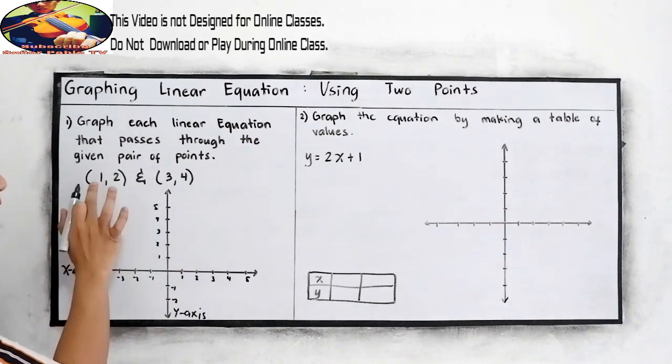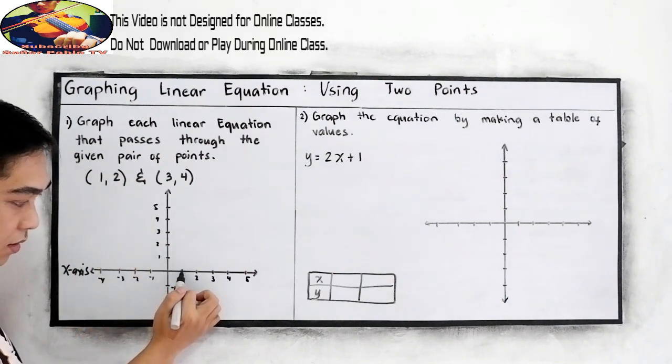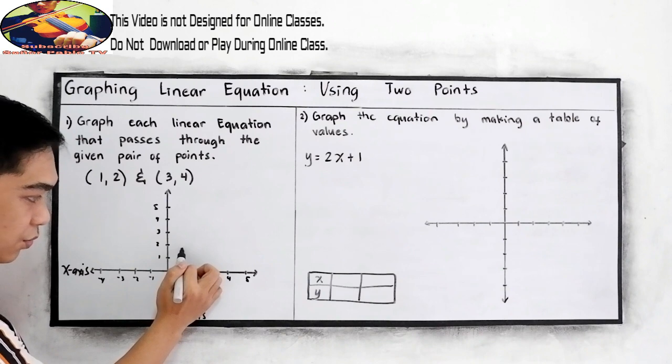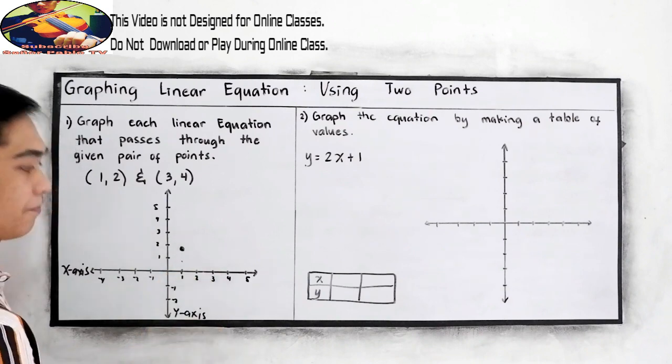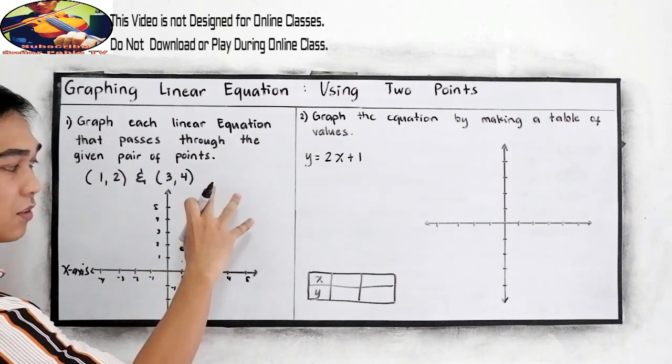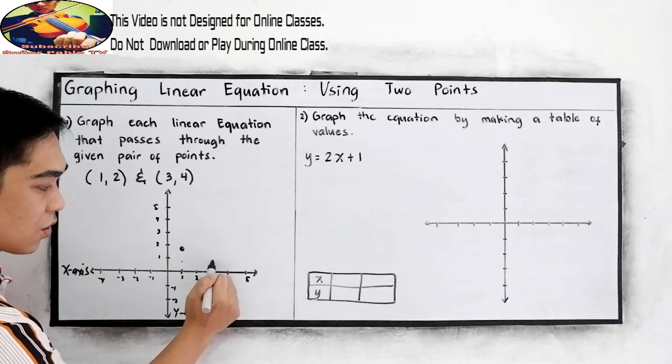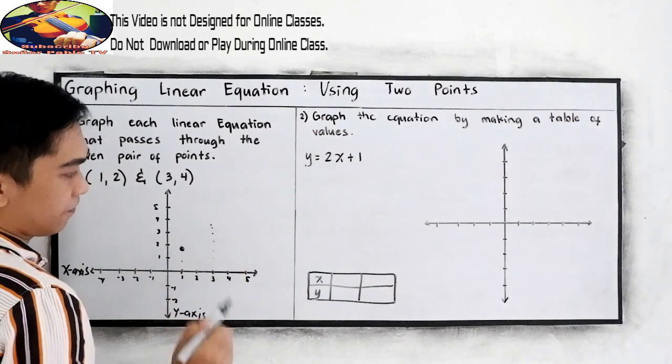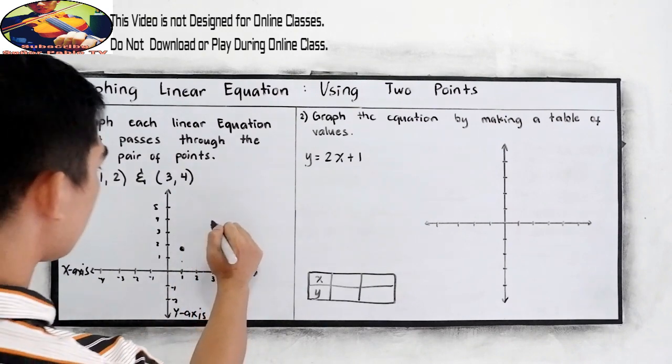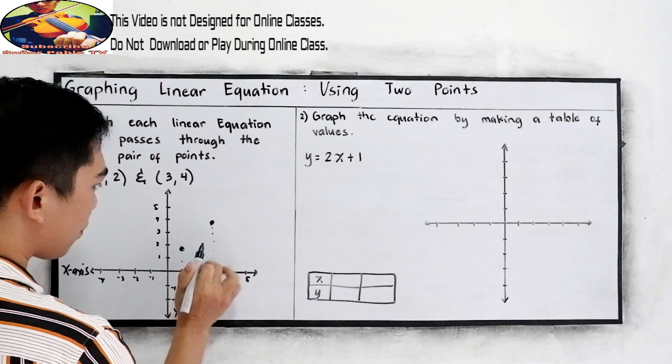Now let us graph 1 and 2. So x is 1, then our y is 2, so it's here. Next, 3, positive 4. So positive, positive. Therefore, it is in quadrant 1. So 3, 4 x, then going up for 4. So it's here. This will be our two points.